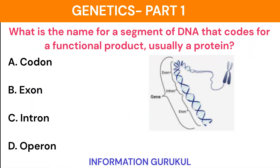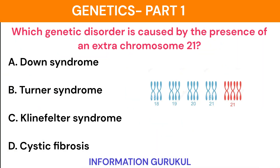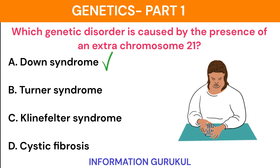What is the name for a segment of DNA that codes for a functional product, usually a protein? Gene. Which genetic disorder is caused by the presence of an extra chromosome 21? Down syndrome.